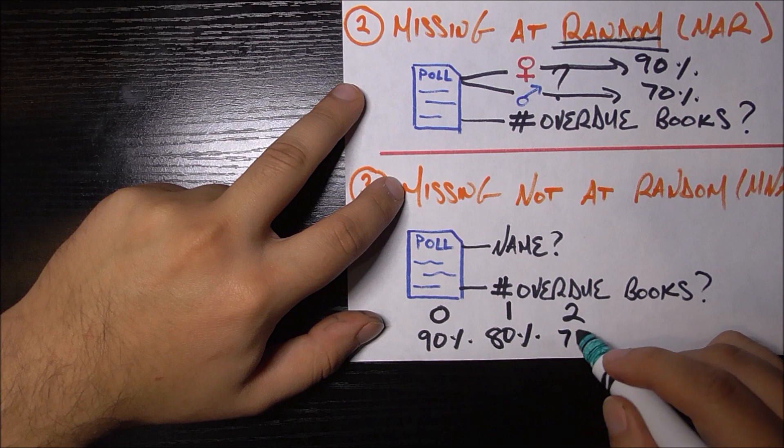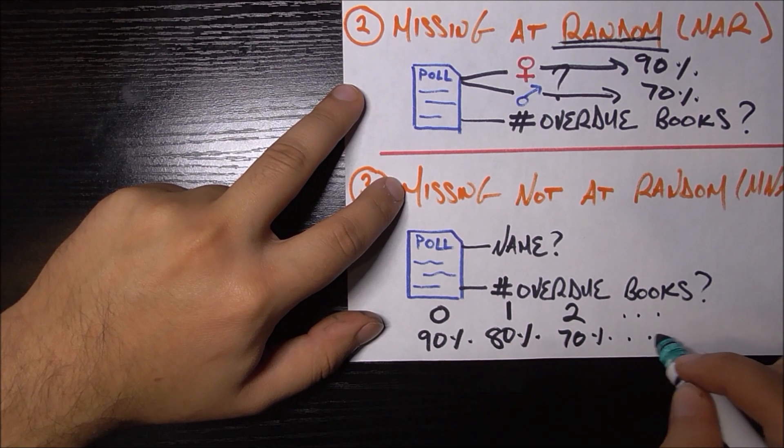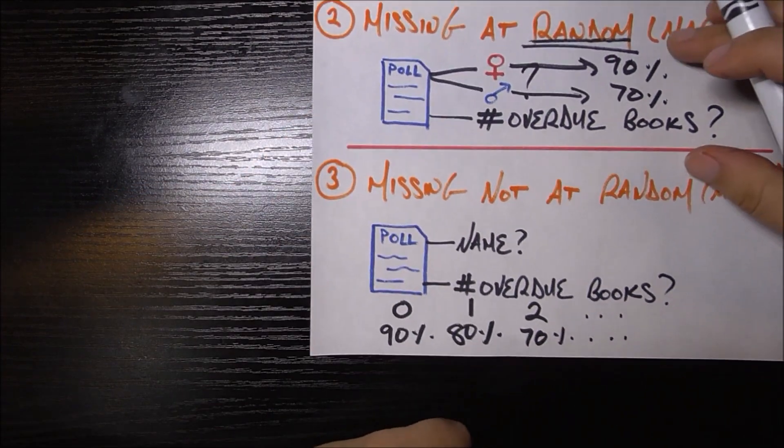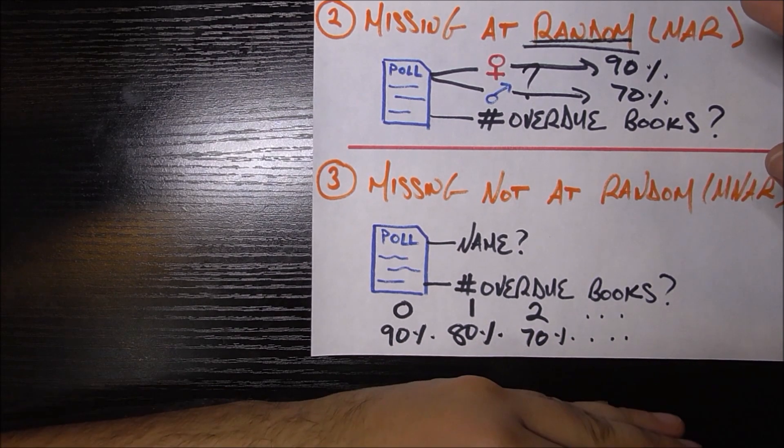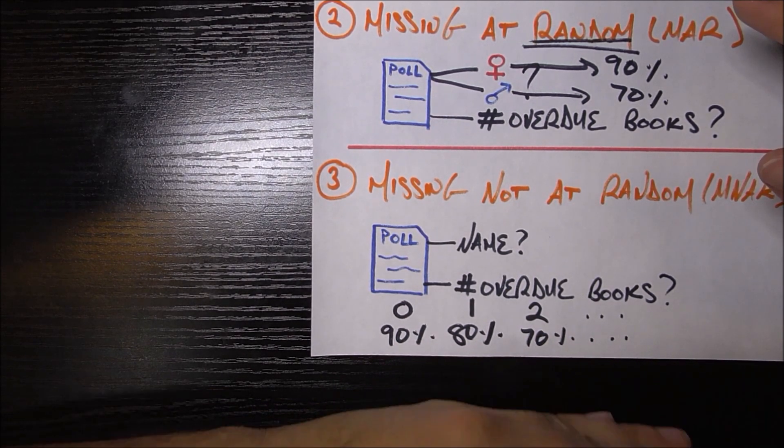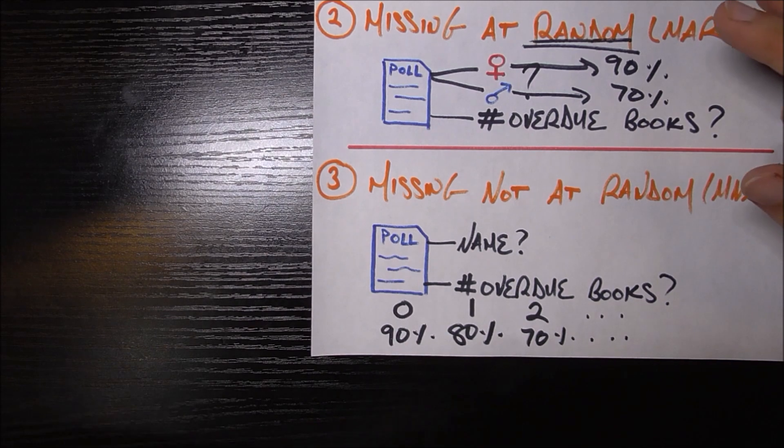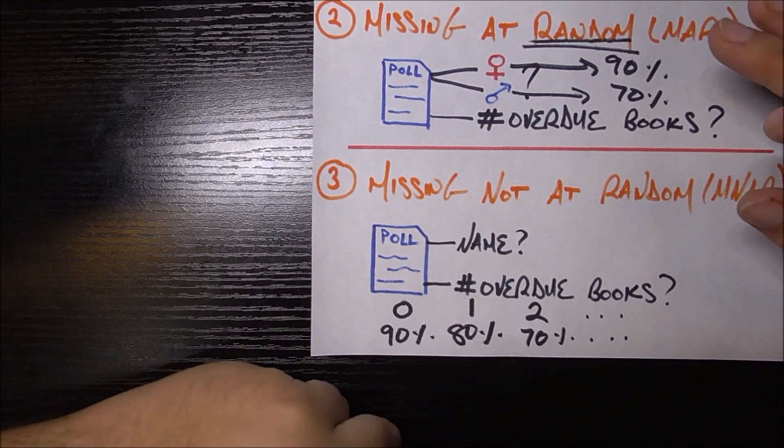And furthermore, if you have two overdue books in reality, you're only 70% likely to tell me, and so on. The general idea here is the more overdue books you truly have, the less likely you are to tell me about that number, and the more likely I am to have a missing value for you in that overdue books column.